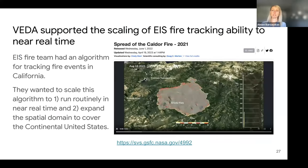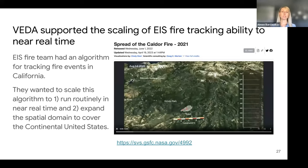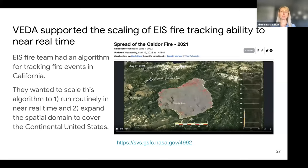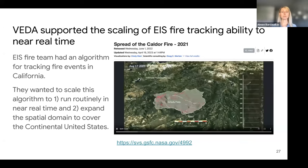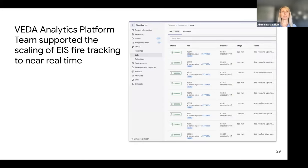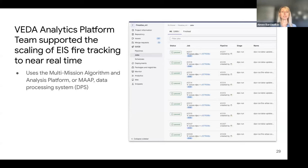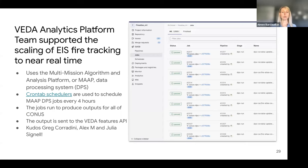VEDA supported the scaling of EIS FIRE tracking ability to near-real-time. The team had an algorithm they were running more or less manually to track FIRE events in California, and they wanted to automate and operationalize it to run routinely in near-real-time and expand the spatial domain to cover the continental United States. The VEDA analytics platform team supported this scaling by using the Multi-Mission Algorithm and Analysis Platform, or MAP, and its data processing system. The team created crontab schedulers to schedule MAP DPS jobs every four hours to produce outputs for all of CONUS.